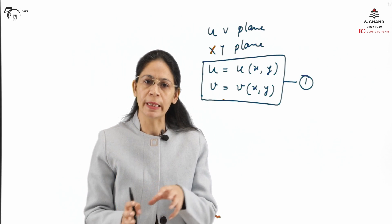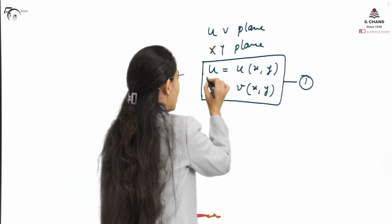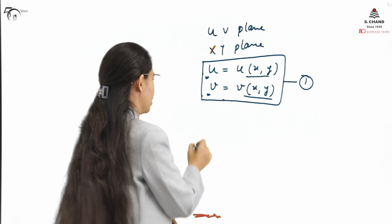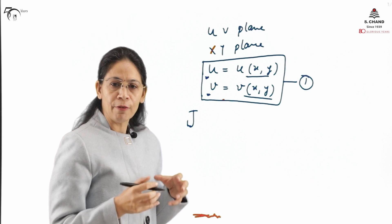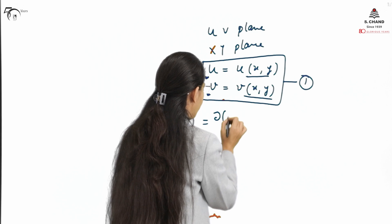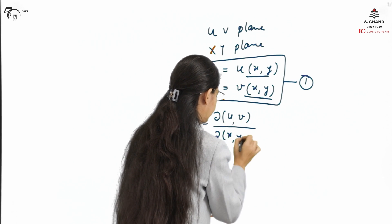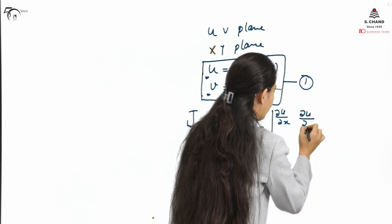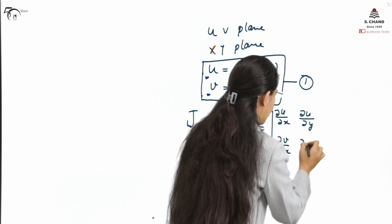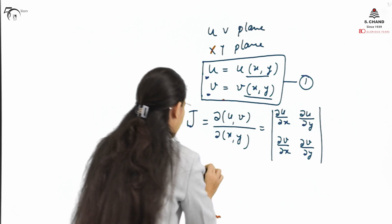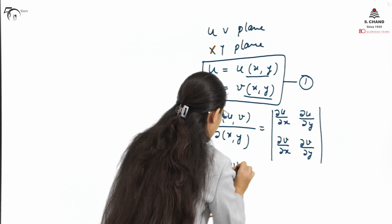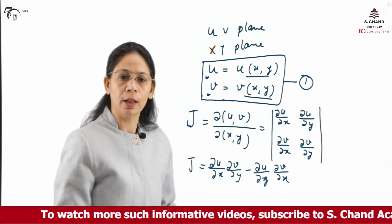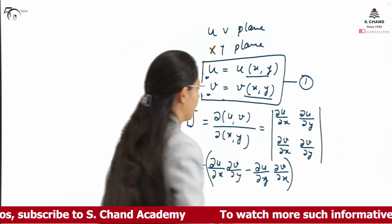When we transform from one coordinate system to another — here from the uv plane to the xy plane — we need the Jacobian to transform that. The Jacobian is represented by J. For the transformation from uv to xy, it is defined as the determinant of ∂u/∂x, ∂u/∂y, ∂v/∂x, and ∂v/∂y. Simplified, this becomes (∂u/∂x)(∂v/∂y) − (∂u/∂y)(∂v/∂x). This is called the Jacobian.